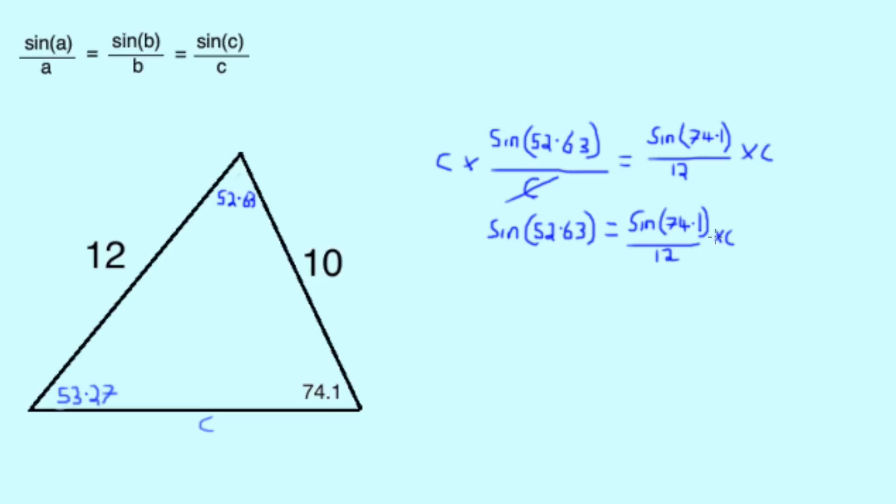Finally, we'd like to get the C on the right-hand side by itself. Therefore, we need to turn the sine 74.1 over 12 upside down and multiply it by the expression. We remember also that what we do to one side of the equation, we must also do to the other. So, the new expression becomes 12 over sine 74.1 times sine 52.63 equals C.